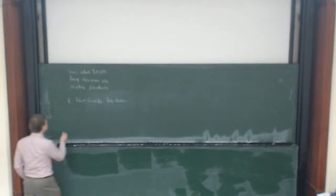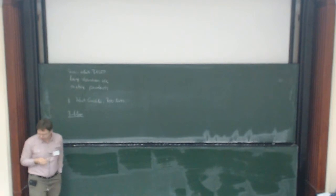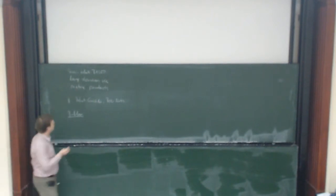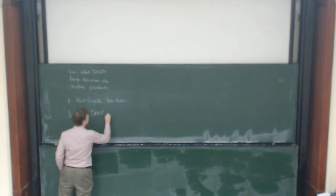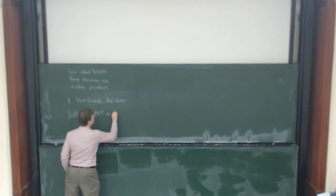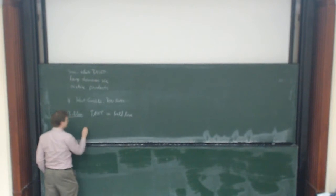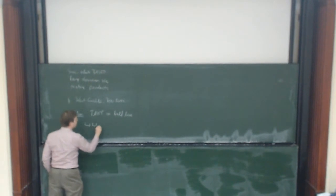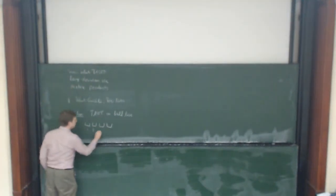I want to talk about a fairly simple problem: the totally asymmetric exclusion process on a half line. We have a number of boxes indexed with the natural numbers.